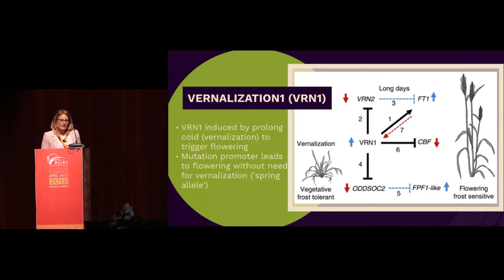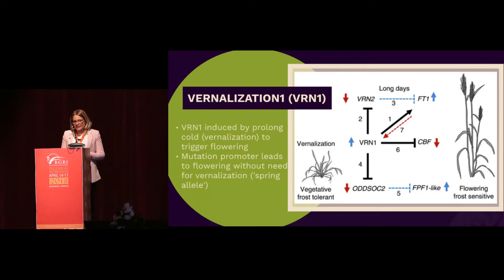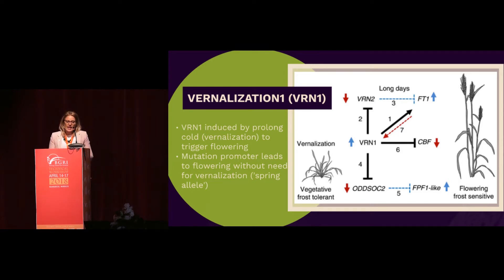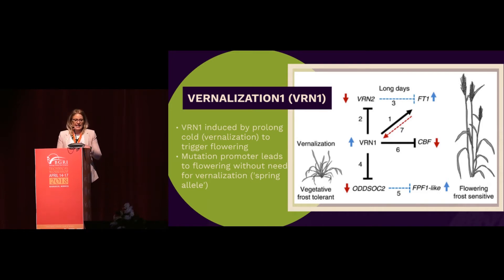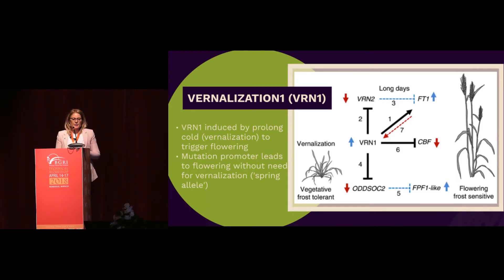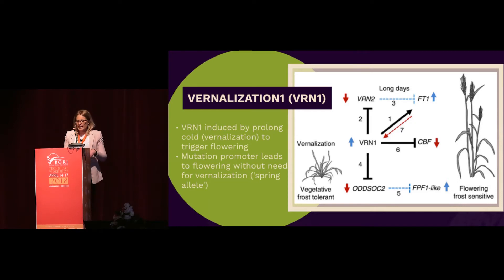Briefly, vernalization one is a key gene that promotes flowering in wheat and a number of cereal crops. In winter wheat, a prolonged period of cold induces vernalization one, which down-regulates negative repressors such as VRN2 and up-regulates flowering genes, allowing the crop to move from vegetative to flowering state. In Australia we predominantly grow spring wheat, which is made possible by a mutation in the promoter of vernalization one meaning the crop doesn't need that cold period and can progress to flowering more quickly, reducing the growth cycle.